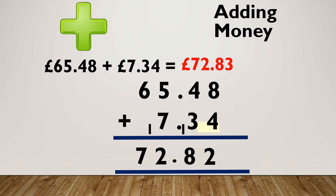When writing money I need to be really careful. I need to make sure the £ sign is at the front and I don't need both symbols. The most common mark I see being lost is people writing £72.83p — we do not put both the pence sign and the pound sign on. If I was just writing pence I could write 83p, or in the other format £0.83, because I have no whole pounds. So make sure you're just putting your pound sign on.